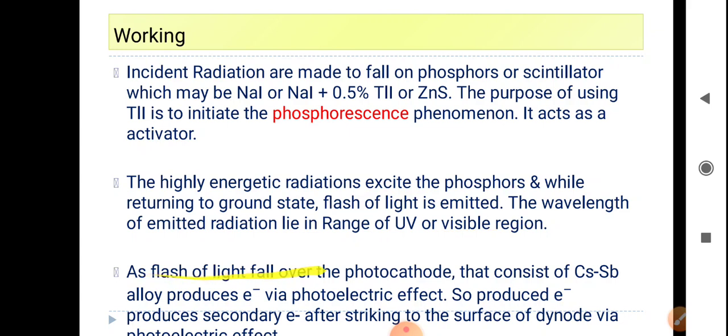A flash of light falls over the photocathode, which consists of cesium-antimony alloy and produces electrons via photoelectric effect. So produced electrons produce secondary electrons after striking the surface of the dynode via photoelectric effect.